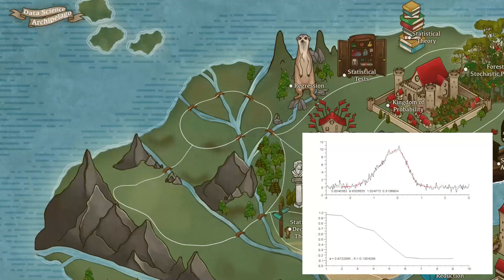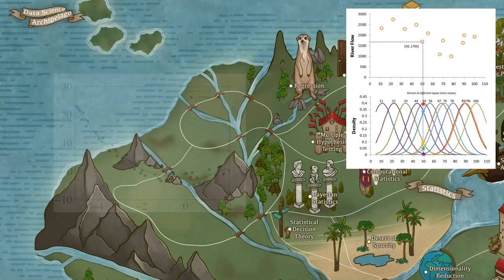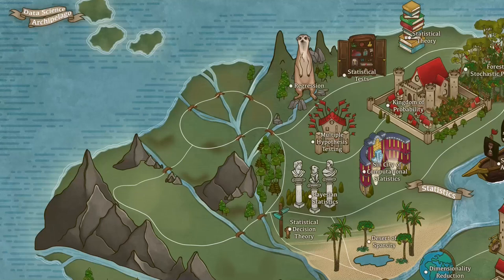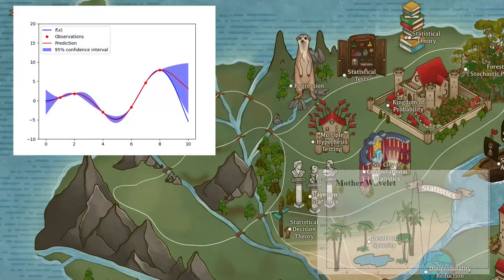Non-parametric regression avoids any assumption and focuses only on the data. Kernel regression is a form of a fancy moving average regression. Other methods include local regression, smoothing splines, Fourier and wavelet regression, Gaussian process regression, regression trees, k-nearest neighbors, and more.